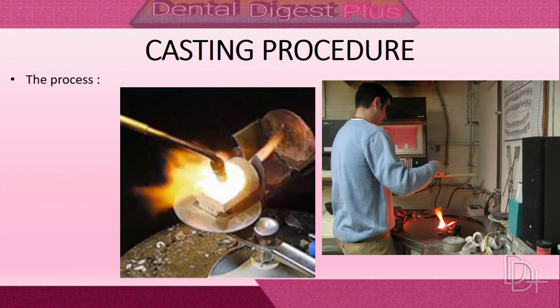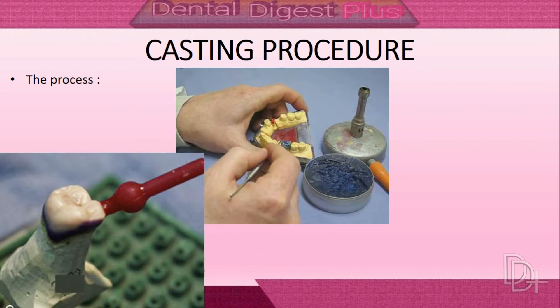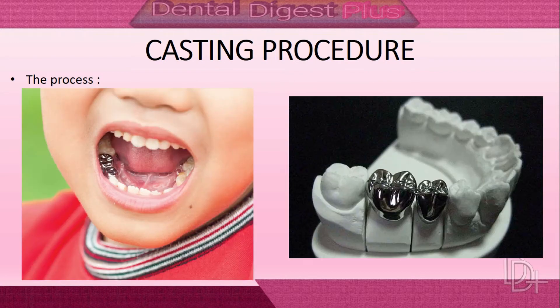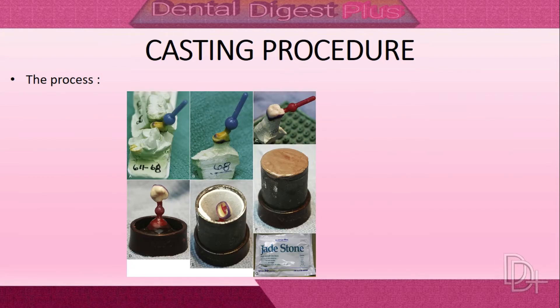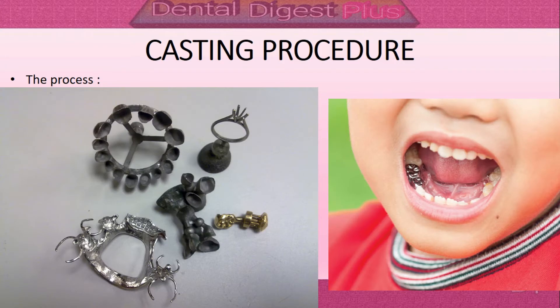Casting is the process by which a wax pattern of a prepared tooth is fabricated and converted into its metallic replica. The lost wax casting technique was first described at the end of the 19th century for making dental castings.